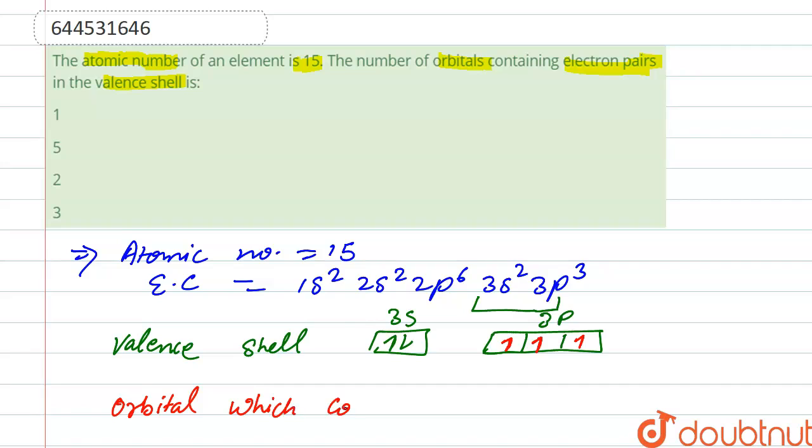Right, so we can say the orbital which contains electron pairs is 3s. So the number of electron pair orbitals is only one. So our correct option is option first.